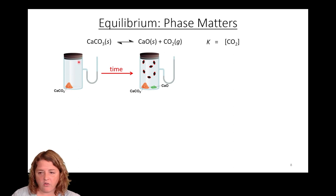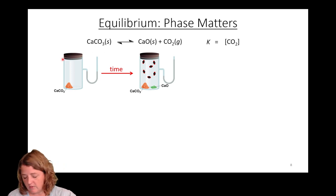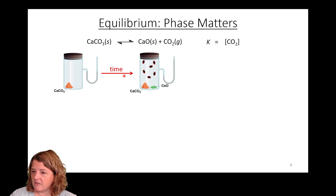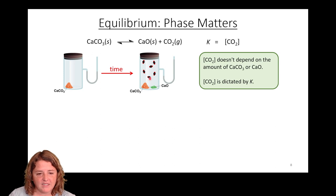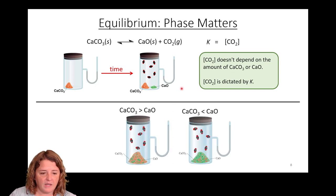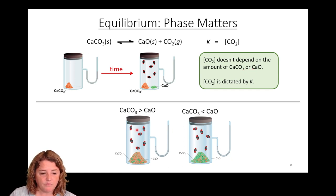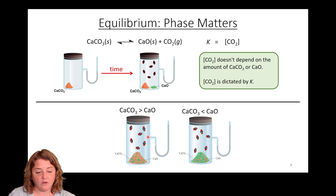If you started out with calcium carbonate in a closed vessel and let it go over some amount of time, you would eventually see that the calcium carbonate produces calcium oxide and carbon dioxide gas. The amount of CO2 is dictated by the magnitude of K. If K is really big, you'll have a lot of carbon dioxide; if K is really small, you'll only have a little bit. It doesn't matter how much calcium carbonate you started with, as long as you have enough to reach equilibrium. Whether you start with more calcium carbonate or a different mix, you still end up with the same number of CO2 molecules at equilibrium.